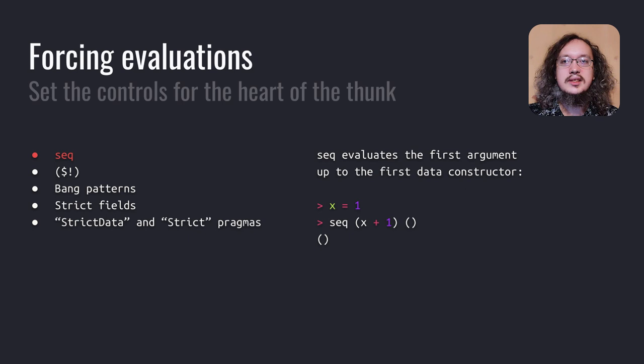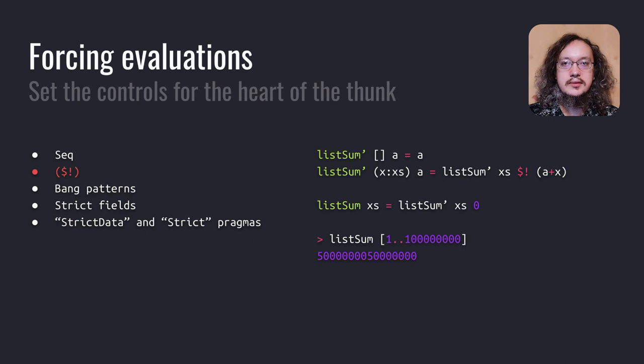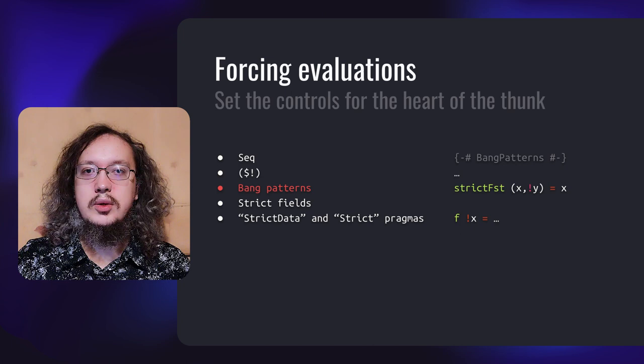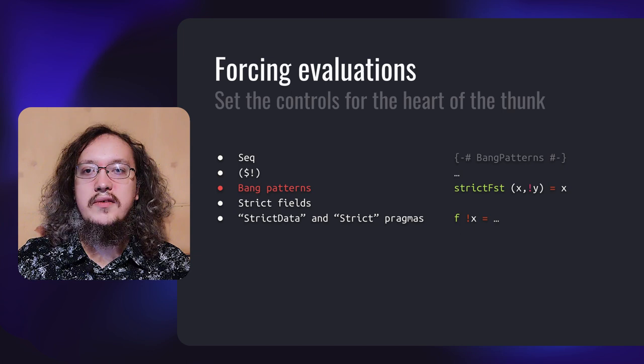Let's explore some of these instruments. The first one is the seq function — it evaluates its first argument and returns the second one. The second one is the strict application operator ($!), which evaluates its second argument and then applies the first one to the result. With this operator, we can easily improve the memory consumption of our sumList function by orders of magnitude, by evaluating the accumulator at every step. To use the next instrument called BangPatterns, we need to enable the corresponding language extension. BangPatterns let us force the evaluation of an expression bound to a name — in our example, function strictFST evaluates y and returns x.